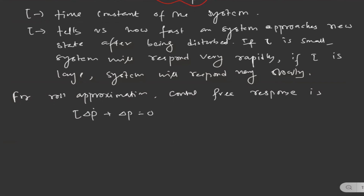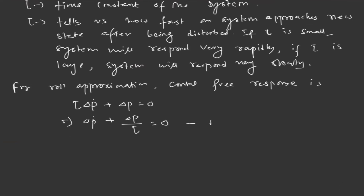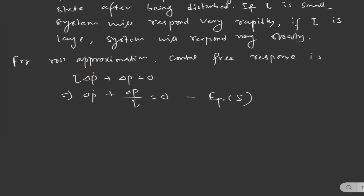We can write: tau · P_dot + ΔP/tau = 0, which is equation number 5. The only eigenvalue from this equation is equal to −1/tau. If we apply the Laplace transform, we get tau·s · ΔP(s) + ΔP(s) = 0, which gives (tau·s + 1) · ΔP(s) = 0. Hence the root is s = −1/tau.